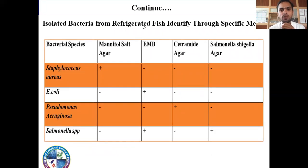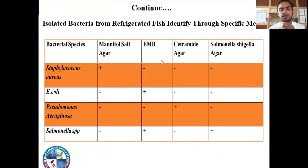Isolated bacteria from refrigerated fish identified through specific media. These are the bacterial isolates and this is the selective media for different bacterial isolates. This is the result for Mannitol Salt Agar, this is the result for EMB agar, this is the result for Cetrimide agar, and this is the result on Salmonella-Shigella agar against these bacterial isolates.